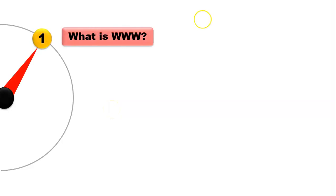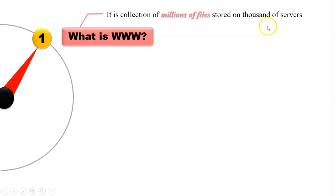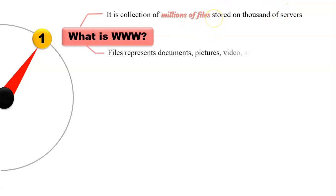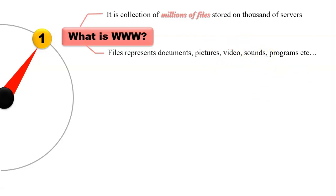WWW means a collection of files stored on servers. On the internet there are millions of files available, all stored on thousands of servers. On the internet, files represent documents, pictures, videos, sounds, programs, etc. Files on the internet in which pictures, video, and sounds are associated are called multimedia files. The remaining files are known as document files.